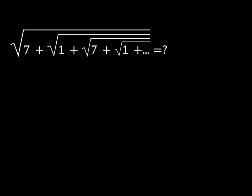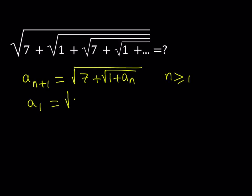We're talking about a sequence that can be written like this: a sub n plus 1 equals the square root of 7 plus the square root of 1 plus a sub n where n is greater than or equal to 1, and a sub 1 is defined as the square root of 7 plus the square root of 1, which can be written as the square root of 8, which can be written as 2 times the square root of 2.